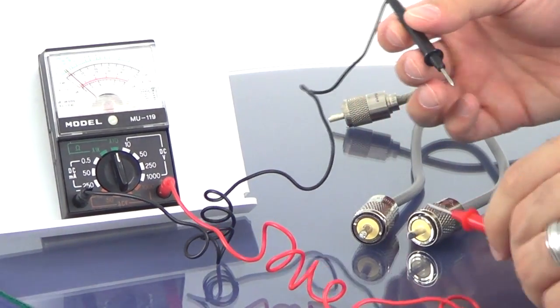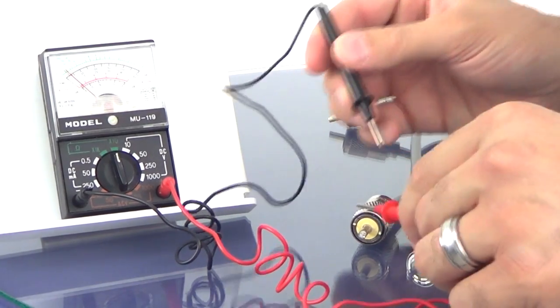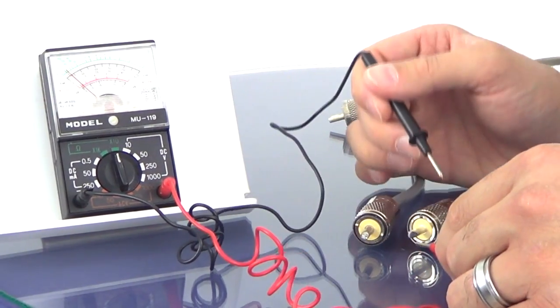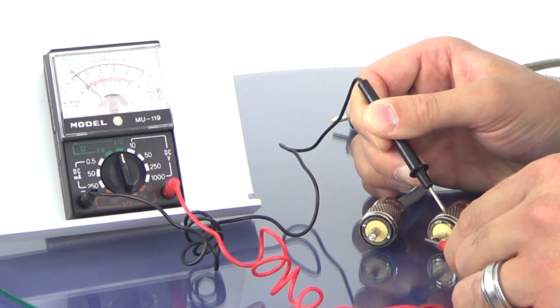And then the third test is from the center conductor to the shield. And you can do this on either side and you can just do both probes on the same side like that and you should get nothing on the multimeter.